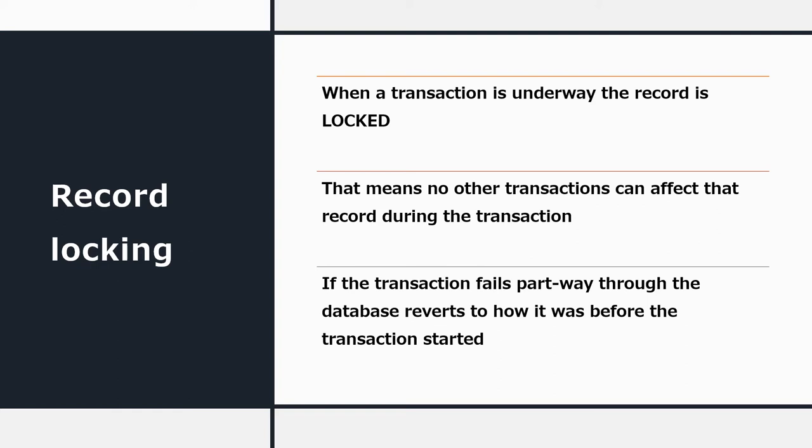In order to prevent problems, transaction processing usually involves record locking. That means that while a transaction is underway the record is locked — nobody else can buy that item, and no other transactions can affect what you're doing until your transaction is completed. Furthermore, if the transaction fails partway through, because the record was locked the database just reverts to how it was, so you're not left with a half-completed transaction.